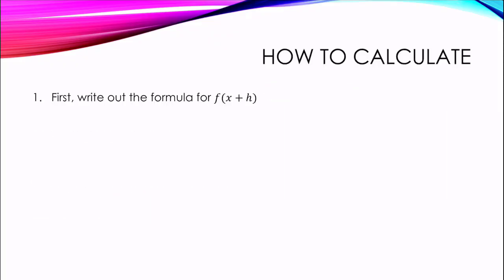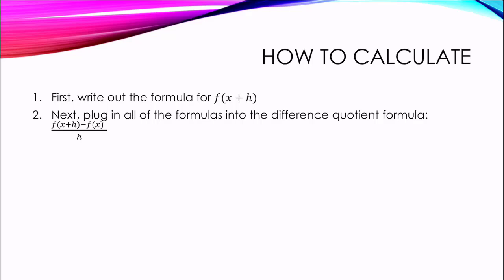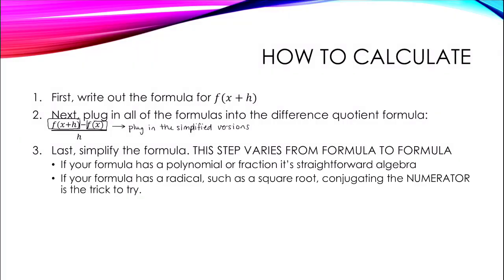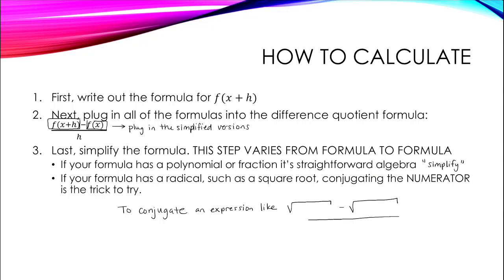First, write out the formula for f of x plus h. Next, plug in all of the formulas into the difference quotient formula, f of x plus h minus f of x over h. Note that you will only be plugging in a formula for f of x plus h and f of x — the h is a constant. Last, simplify the formula. This step varies from formula to formula. If your formula has a polynomial or fraction, it's straightforward algebra. If your formula has a radical such as a square root, conjugating the numerator is the trick to try. Don't worry if you never would have thought of that — that's why we are practicing together.